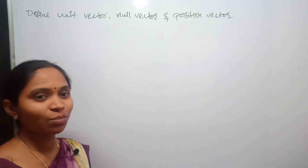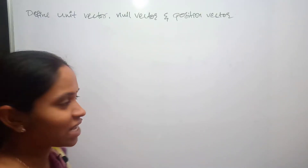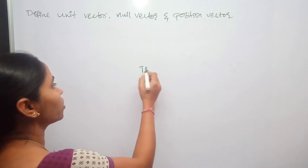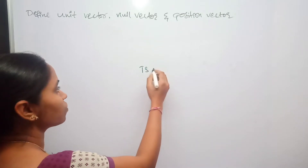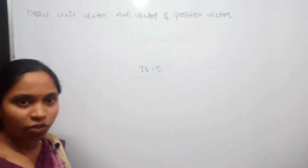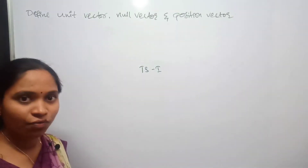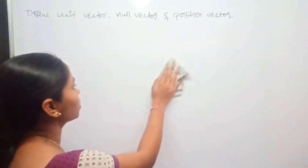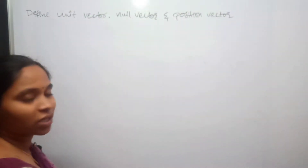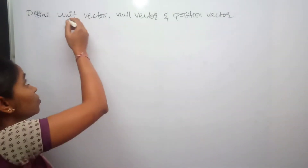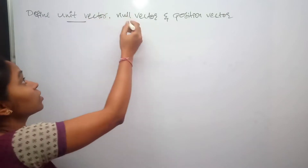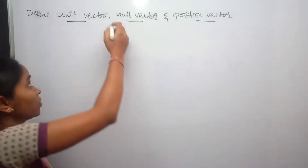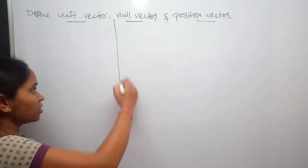Hello students, welcome to Swatna Physics Classes. In this lecture I am going to explain one more important short answer question for your TS Intermediate First Year IPE Physics examination. The question is: define unit vector, null vector, and position vector.